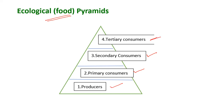Generally, in all ecosystems or in the ecological pyramid, the amount of producers will be large and the amount of tertiary consumers will be small.